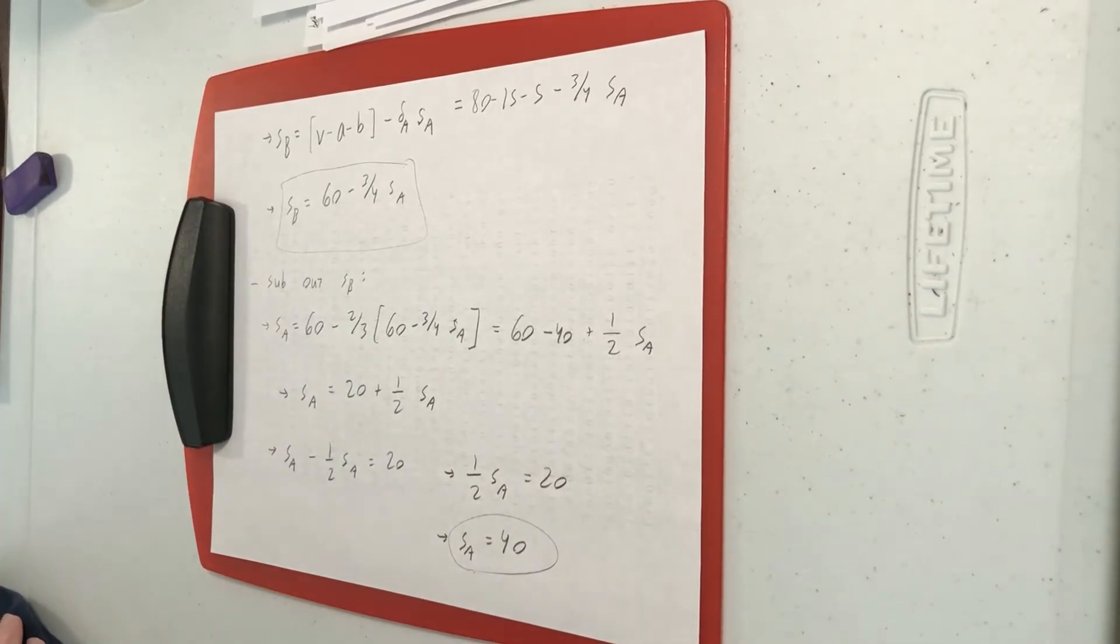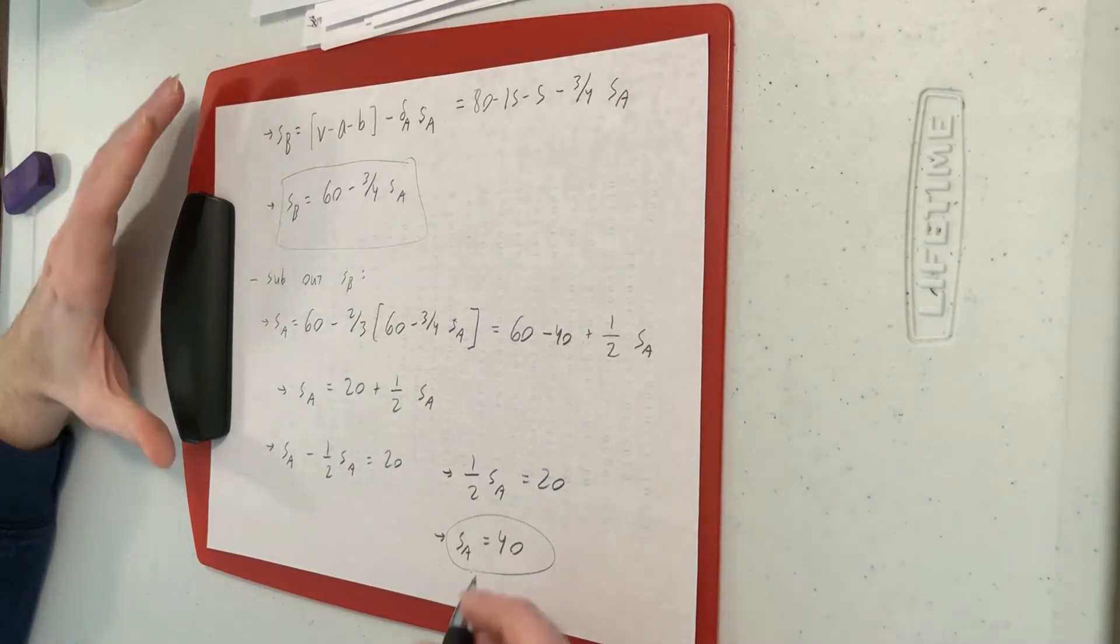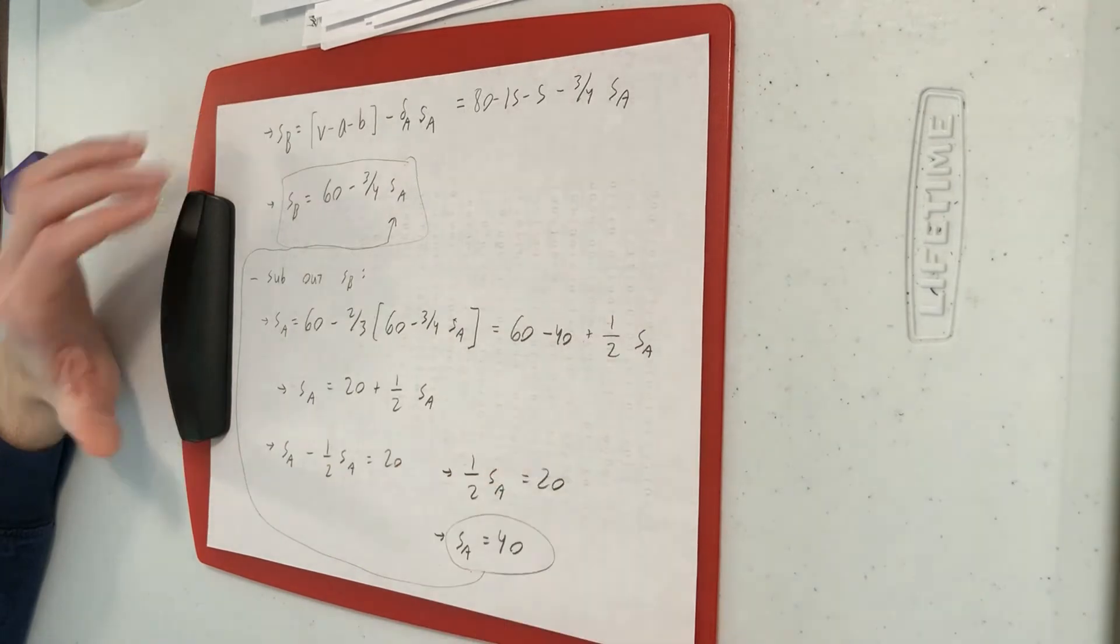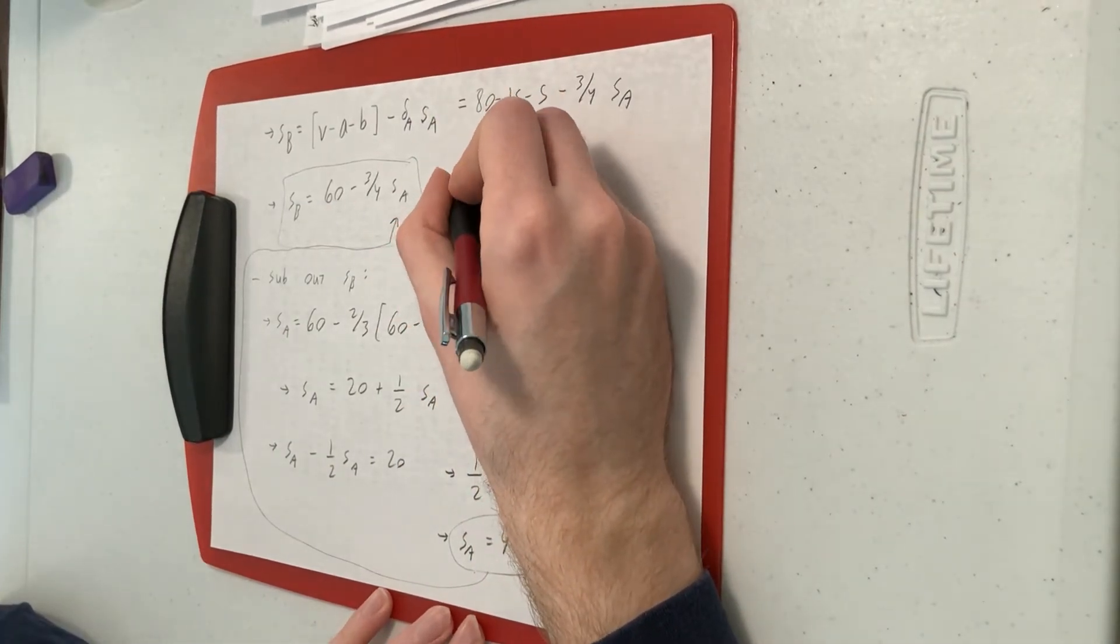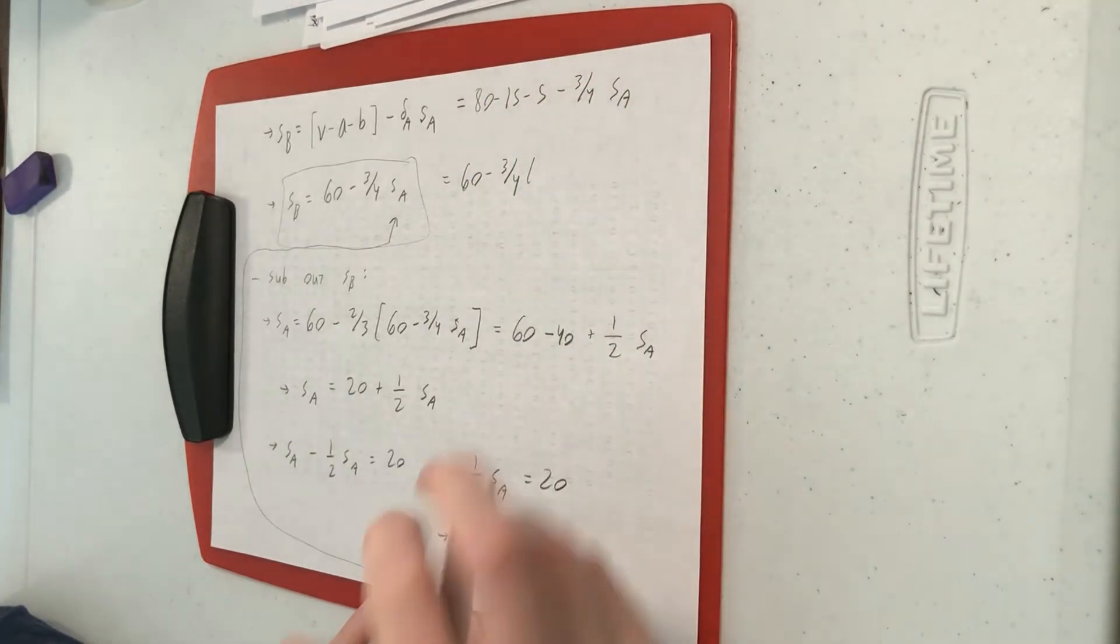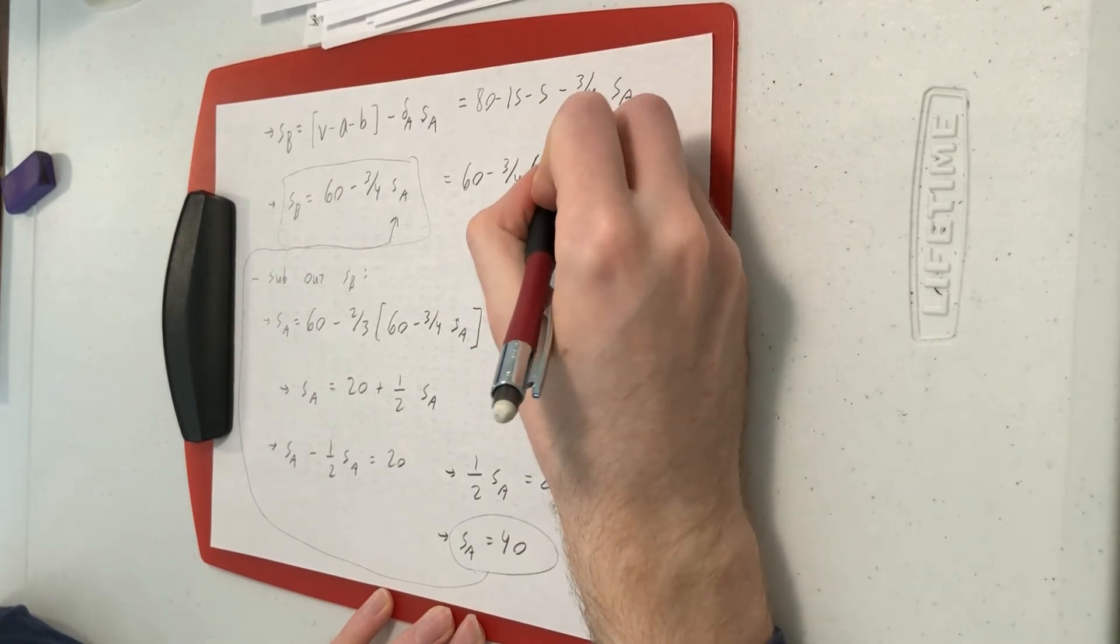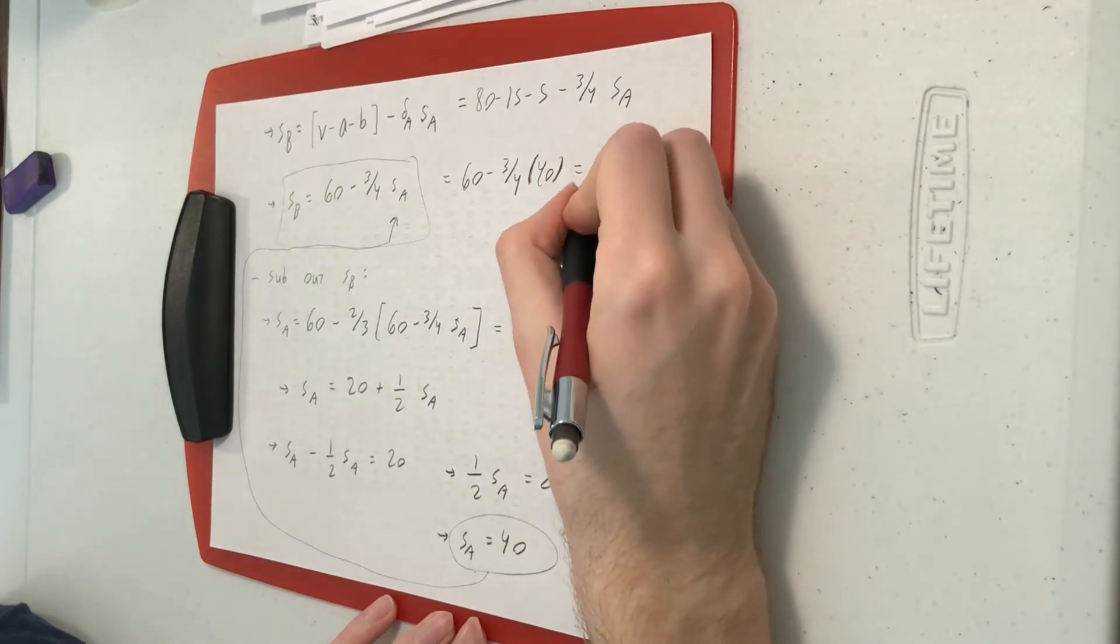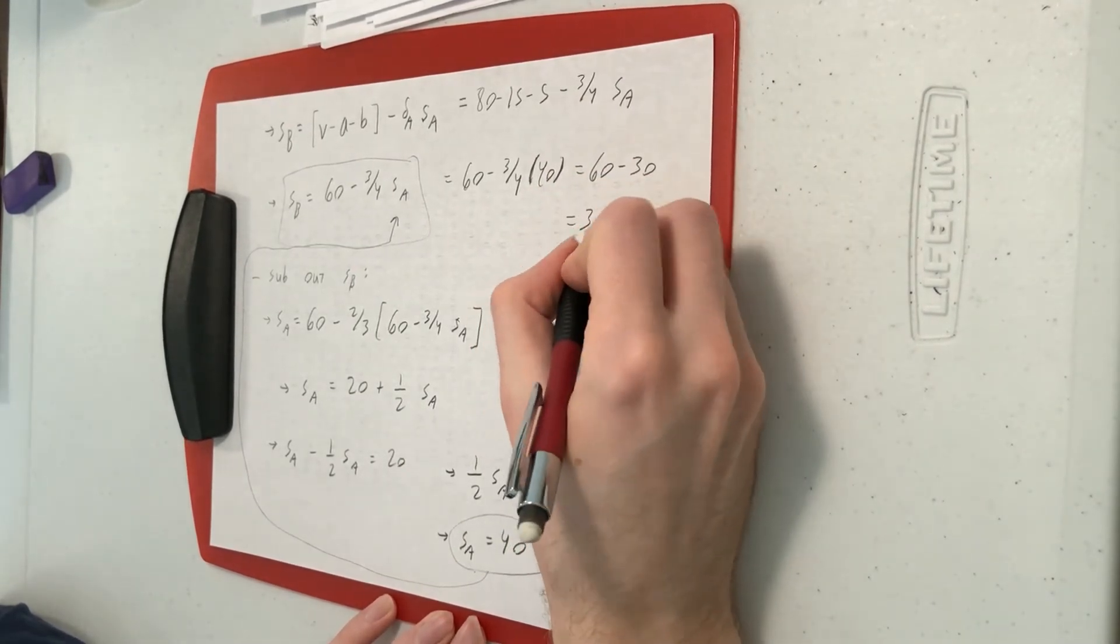Now we can plug that in over here to get SB. SB is going to be 60 minus 3 quarters of 40. The 4's cancel, so 3 quarters of 40 is 30. So you have 60 minus 30, which is 30.